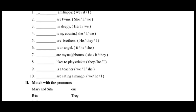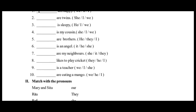Third one: 'Dash is sleepy.' A singular pronoun is followed by the verb 'is.' The options are he, I, we. He is a singular pronoun, so he is the right answer here. He is sleepy.